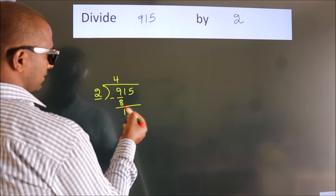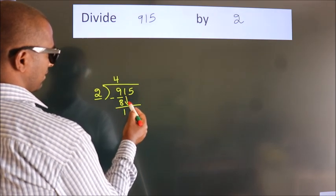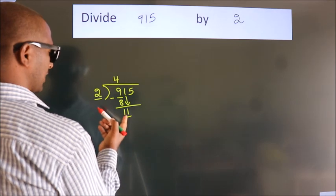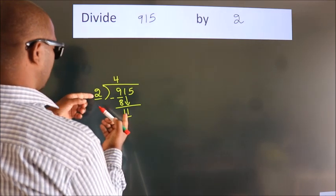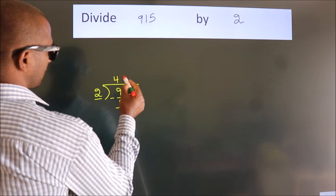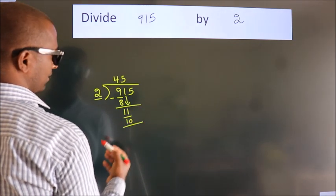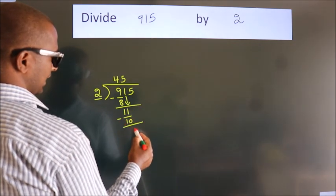After this, bring down the beside number. So, 1 down, so 11. A number close to 11 in 2 table is 2 5s, 10. Now we subtract. We get 1.